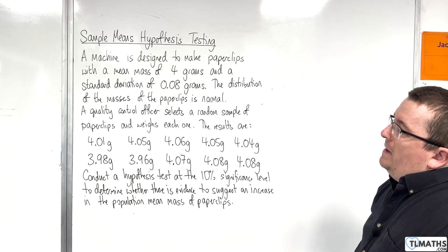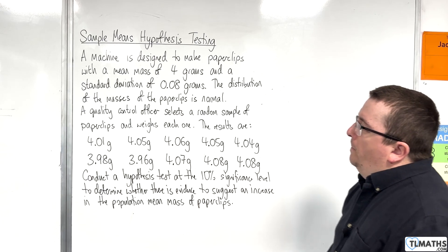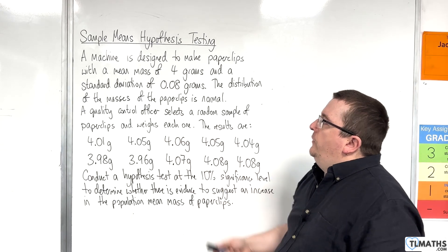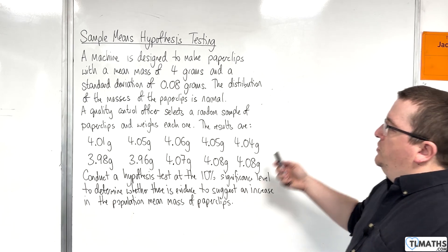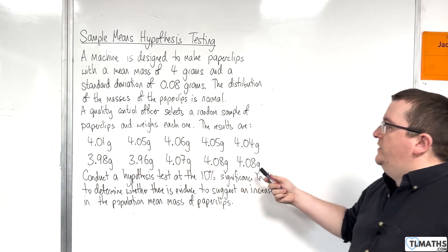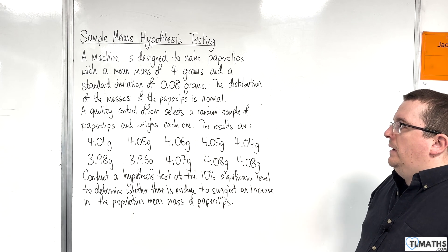The distribution of the masses of the paperclips is normal. A quality control officer selects a random sample of paperclips and weighs each one. The results are here. We have 10 paperclips sampled.